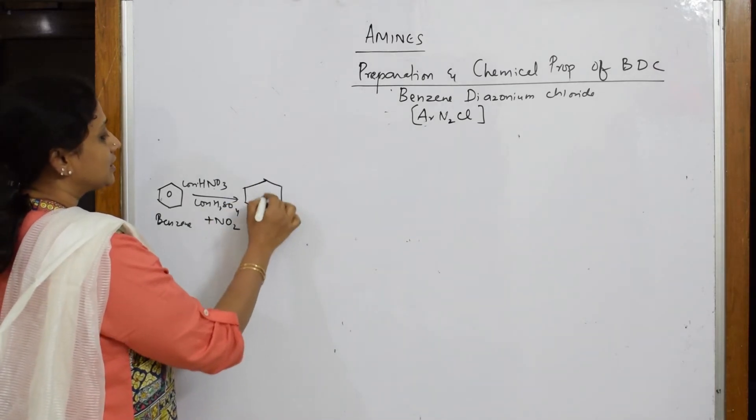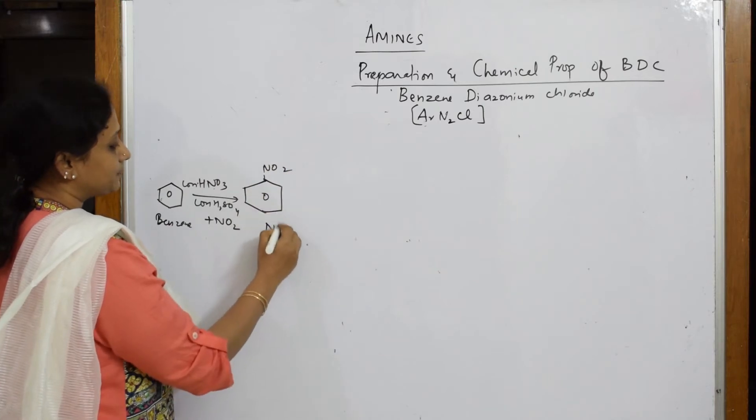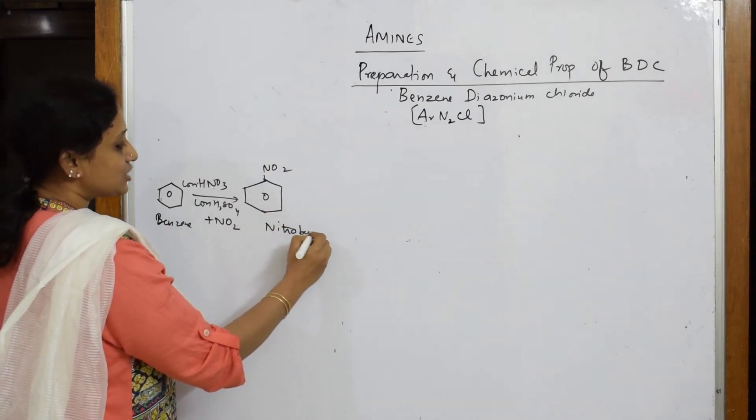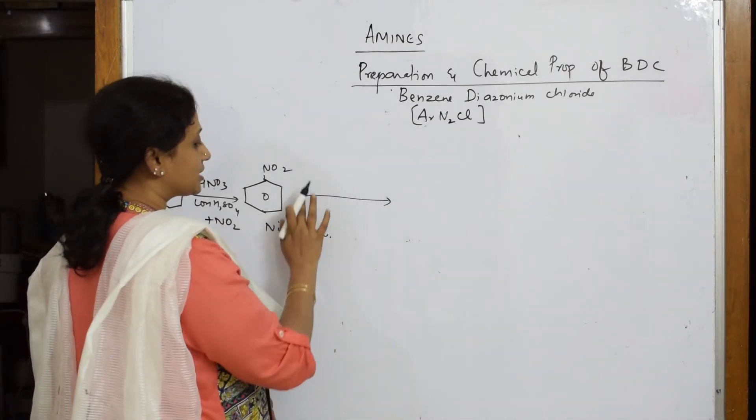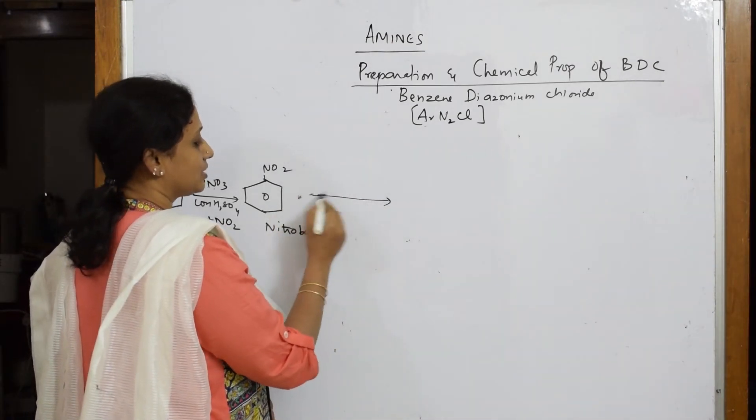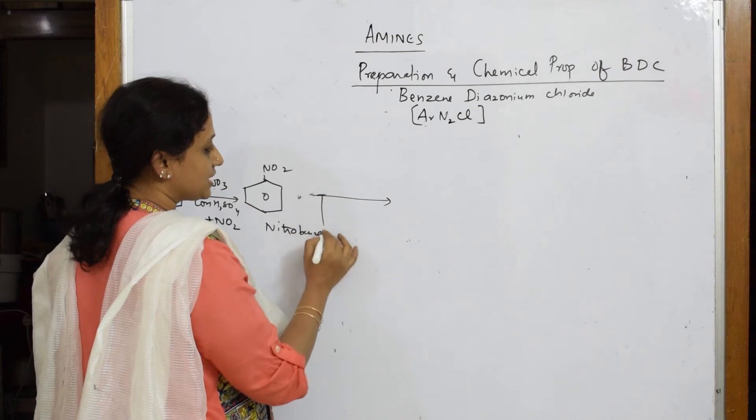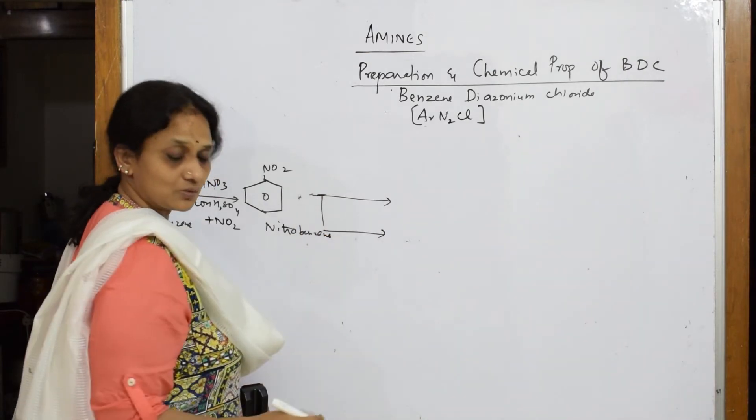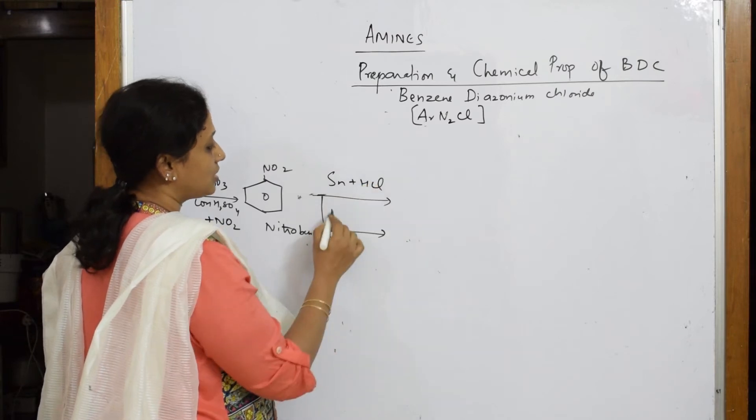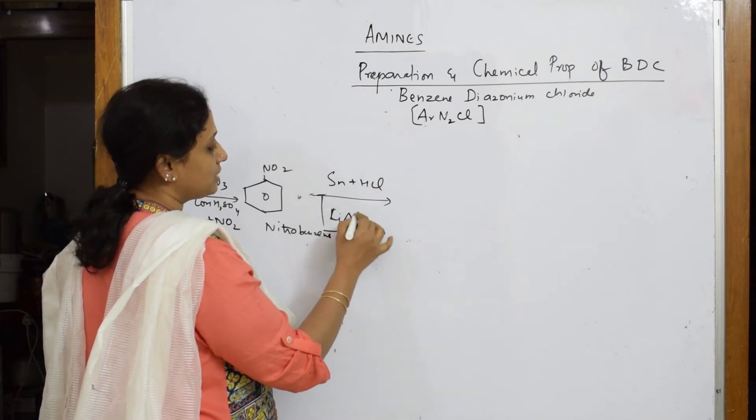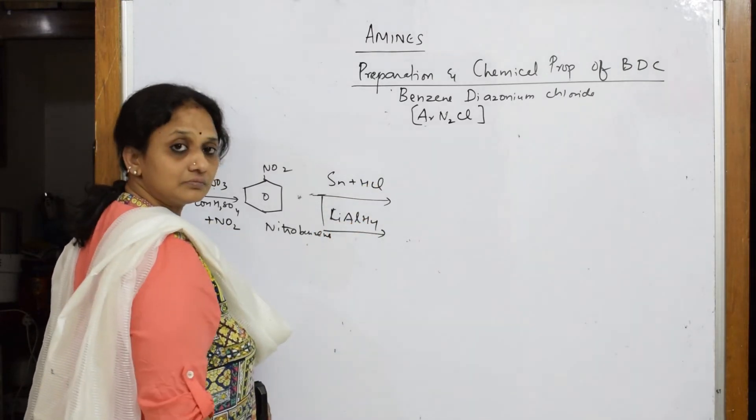Now this nitrobenzene - what am I going to do? I am going to introduce reducing agents. My reducing agents: two types - one can be Sn plus HCl or lithium aluminum hydride.